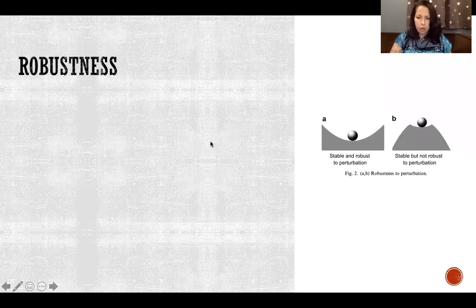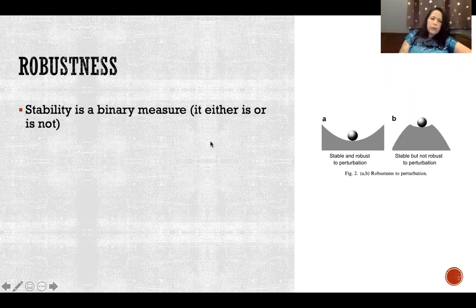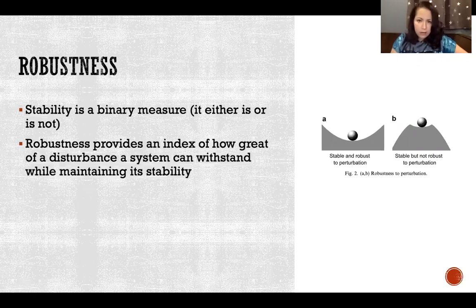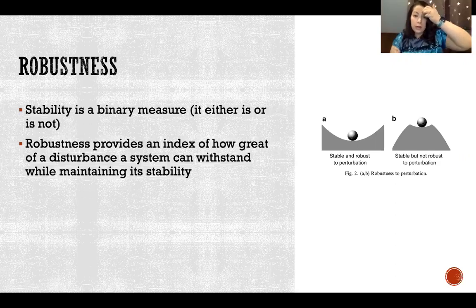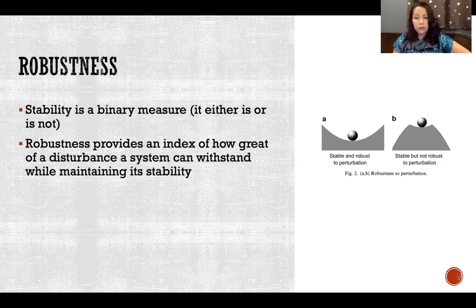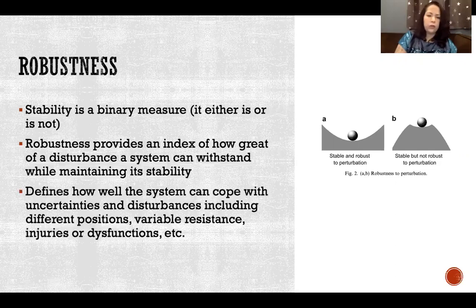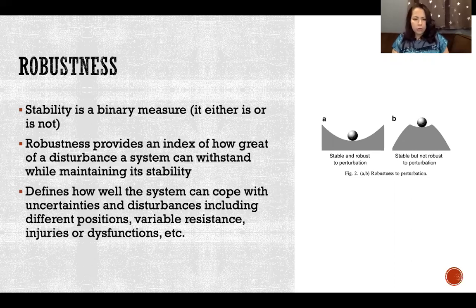This is where we get into robustness. If we look at stability as a binary measure — only two options, either it is or is not stable — then robustness is how we describe or provide an index for how great a disturbance a system can withstand while still maintaining its stability or equilibrium. Robustness defines how well the system can cope with uncertainties and disturbances, including different positions, variable resistance, injuries, or dysfunctions.